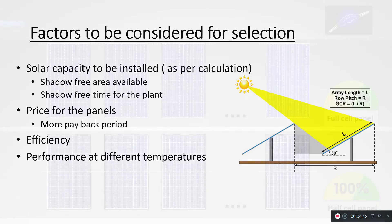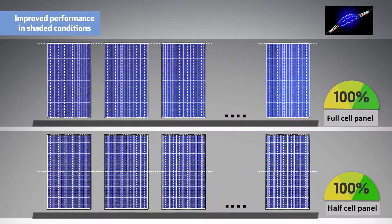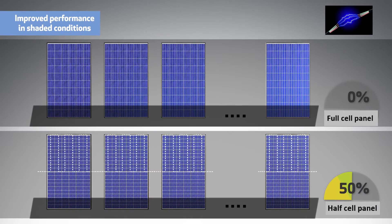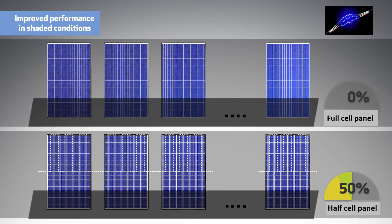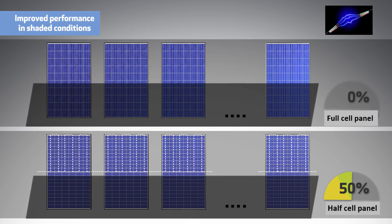If you want to reduce the inter-row spacing, as you can see on your screen, in early morning and late evening there is an inter-row shadow on the lower part of the panels. Because of this, the generation is adversely affected. If you use a normal full cell panel, then the whole panel will lose generation.